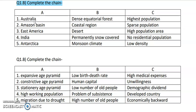First you will match column A with column B, and then match A and B together with column C. Let us quickly start with the first question without wasting any time. I will give different colors for the correct answers so you will get an idea.